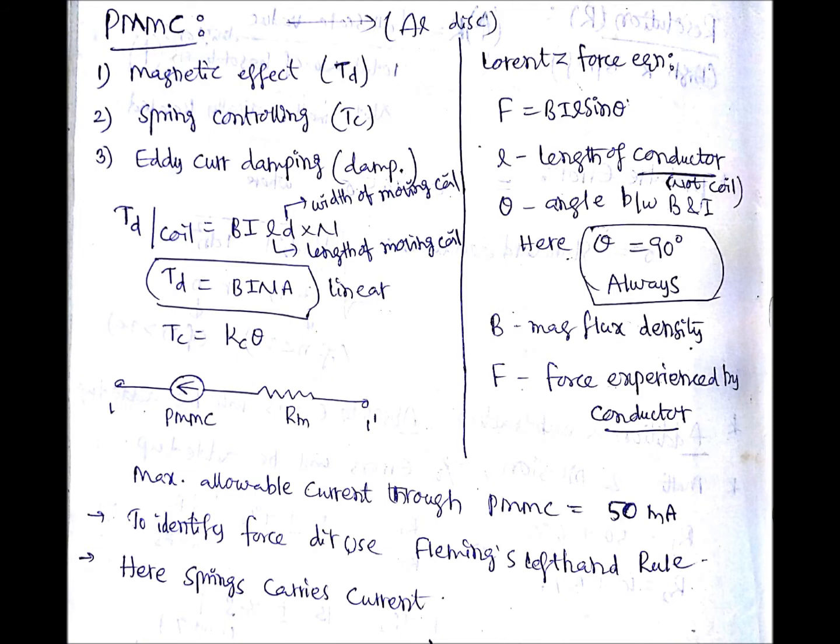If you see the deflection torque production using Lorentz force equation, we have F equals to BIL sin theta, where L is length of conductor, not coil. A coil can have two conductors but here L is length of conductor. Theta is angle between B (flux density) and the current passing through the conductor.